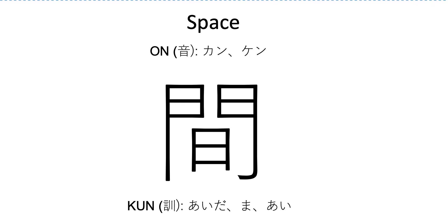When you read the newspaper, for example, ma will be more common, but aida is what's usually used — no aida ni, no aida — meaning during that time, during that space, during that interval. That's the word that's going to be used when it's usually alone in a sentence. However, let's talk about the etymology here.